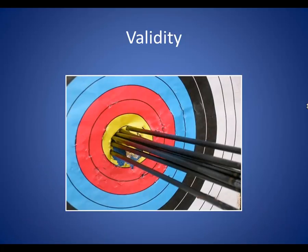A valid measure assesses what it is supposed to measure. So a happiness test measures happiness, not energy. If we think of it in terms of shooting arrows, then a valid arrow means you hit what you want to hit — the bullseye.